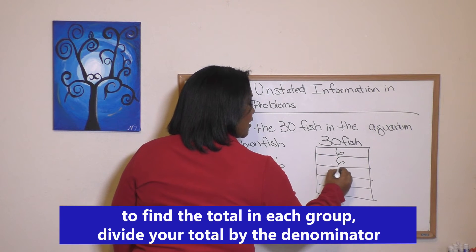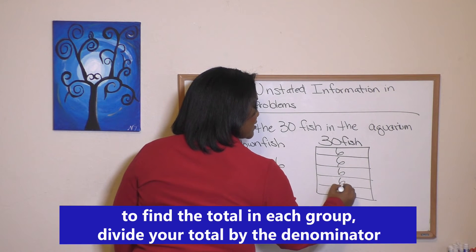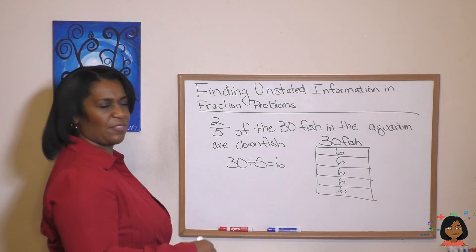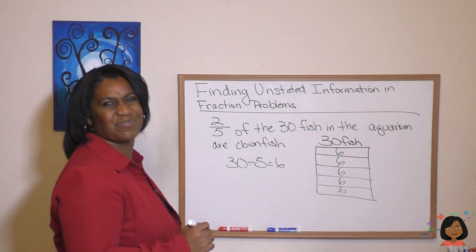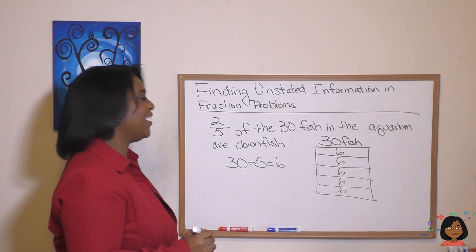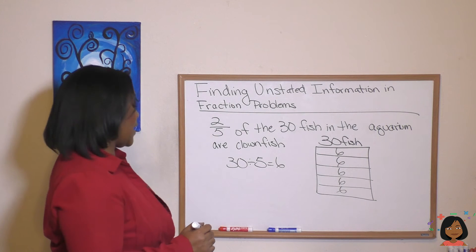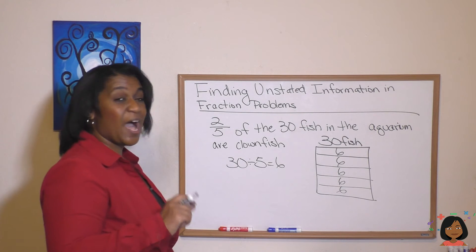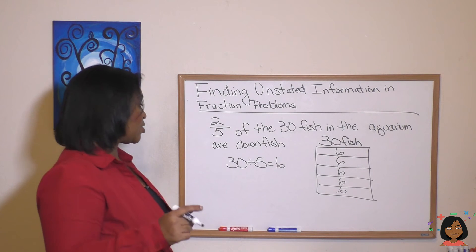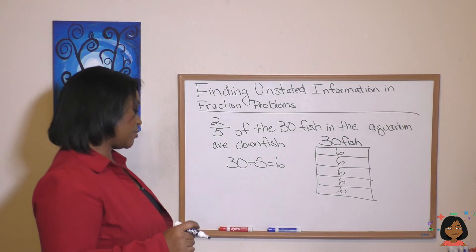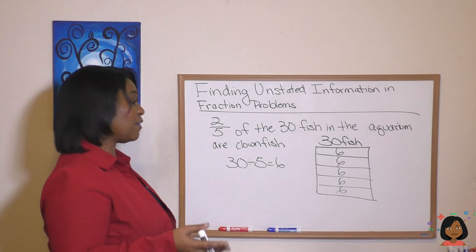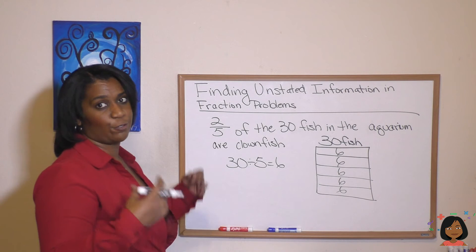So each of the five groups has six fish in it. Our next question was: how many fish are in each part? We know there are six in each part, and they're in five groups.